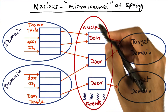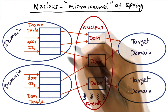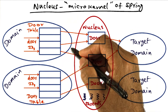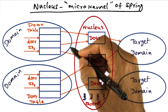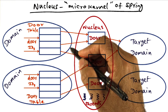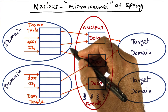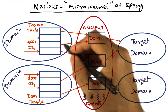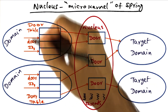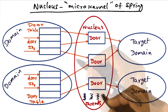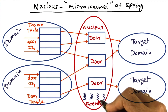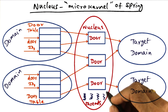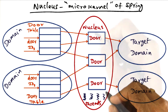The abstractions available in Nucleus are the following. There is the domain. A domain is similar to a Unix process — it's a container or an address space. Threads can execute in a particular domain, and these threads are similar in semantics to pthreads that we have seen before.